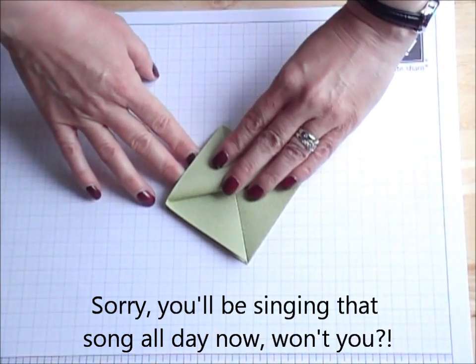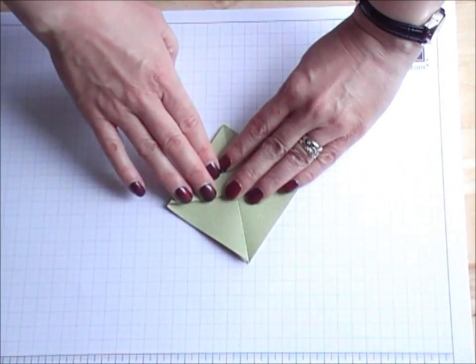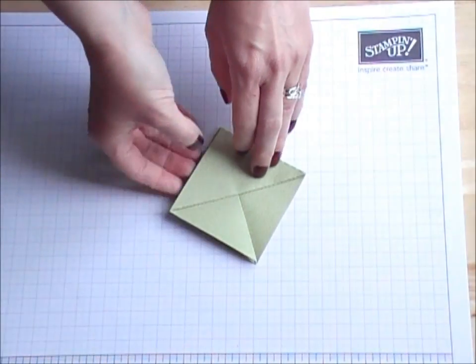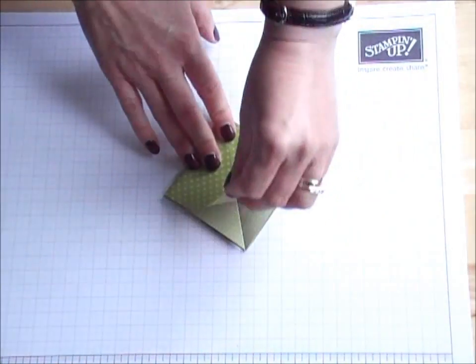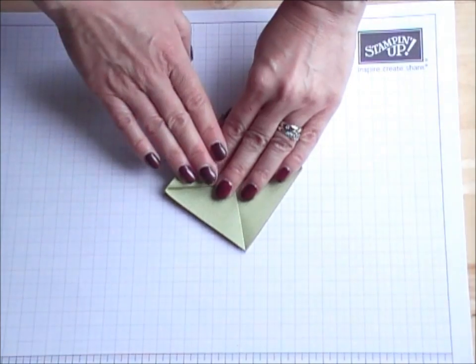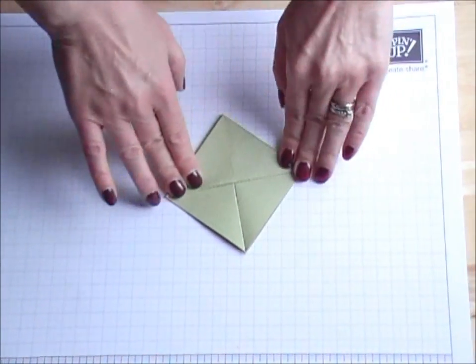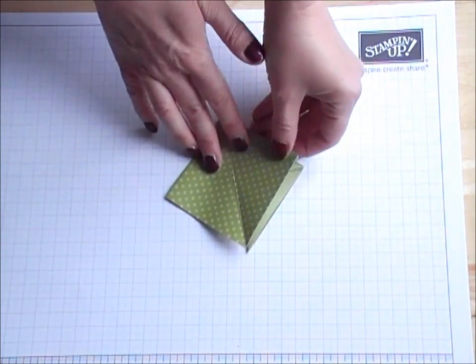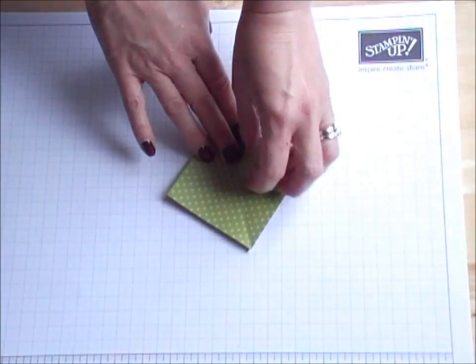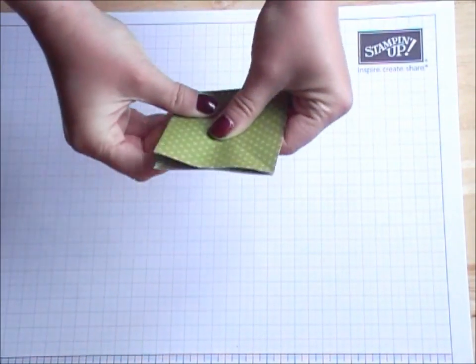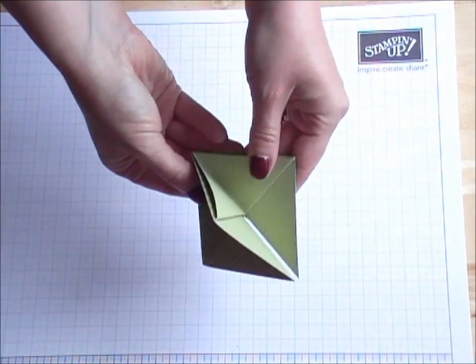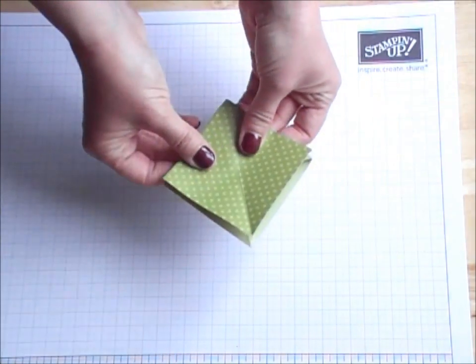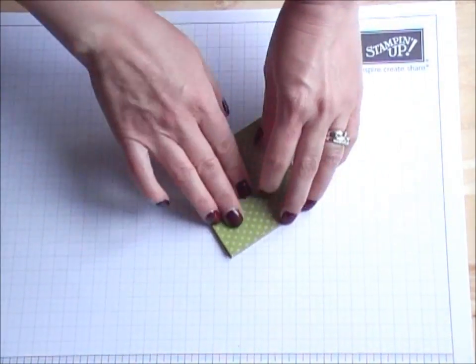You fold this bit down like so. Then you turn it over and fold the opposite side over exactly the same. Then you turn it like a book so that you've got your other sides open. You can see you've got those two that you've just folded. Open it up the other way so you've got your other bits free.